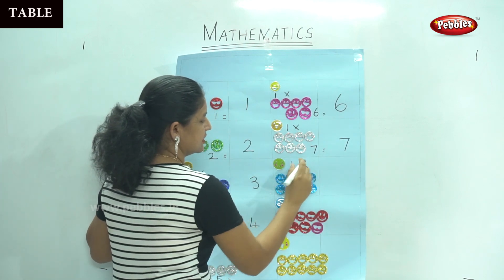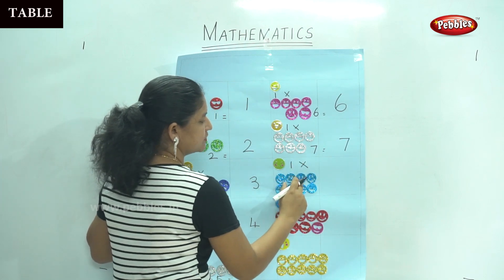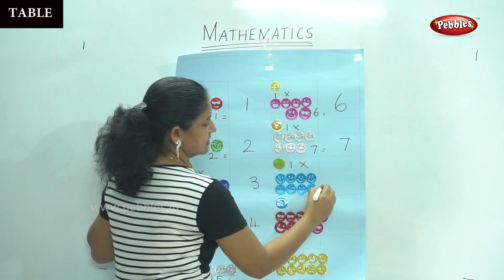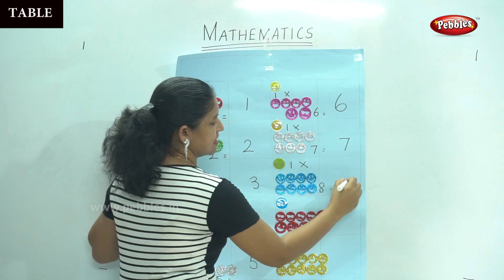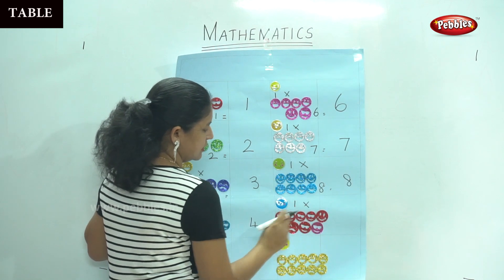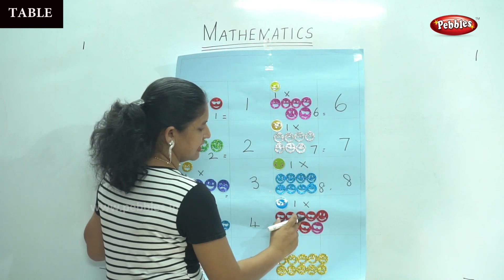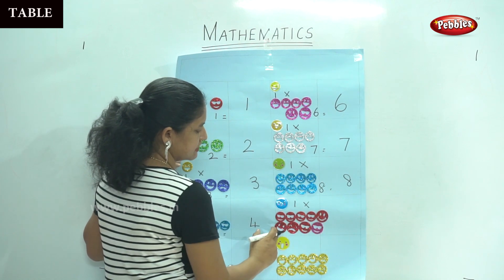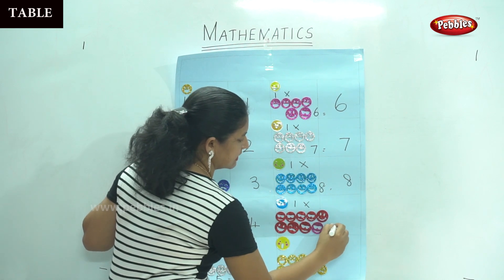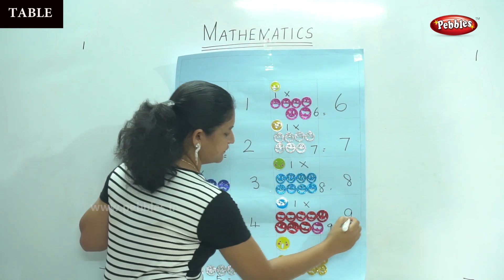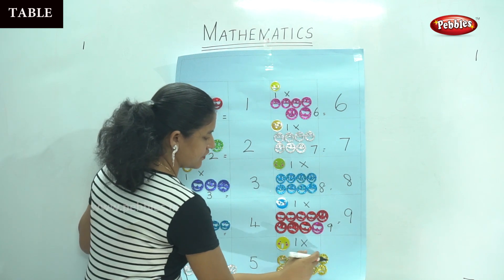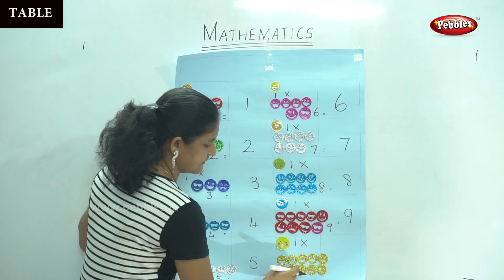1 times 1, 2, 3, 4, 5, 6, 7, 8 — eight smiley faces, that gives us number 8. Then 1 times 1, 2, 3, 4, 5, 6, 7, 8, 9 — that gives us number 9. And 1 times 10.